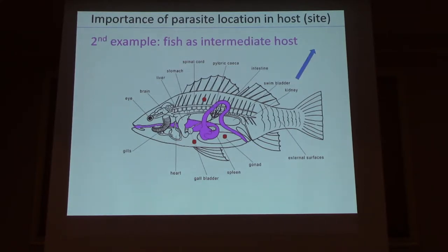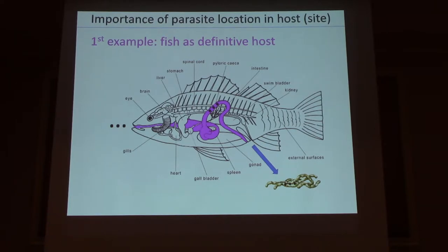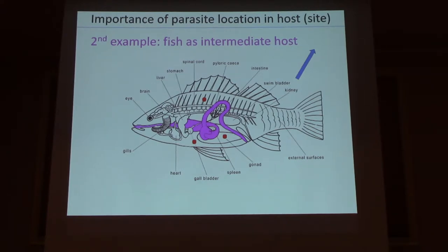If you find parasitic worms elsewhere — encysted in the muscle or body cavity — they don't have an exit via the host's normal behavior. You can infer something else must happen: this host will need to be preyed upon by another animal, whether a bigger fish or some other vertebrate, for the parasite to move up the food web. In the first case the fish is the definitive host; in the second, it's an intermediate host.